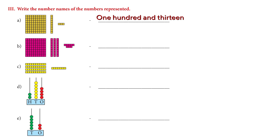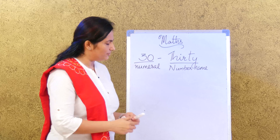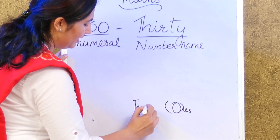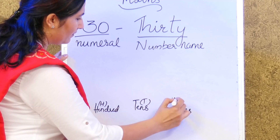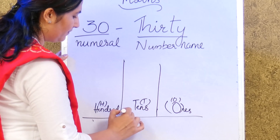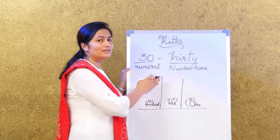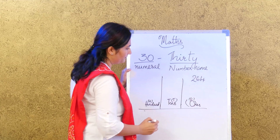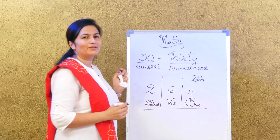Let's do one on D — the abacus method. The abacus has ones, tens, and hundreds rods with beads, which helps us learn numbers better. Let's take the number 264: 4 comes in the ones column, 6 comes in the tens column, and 2 comes in the hundreds column. You remember that from last year.